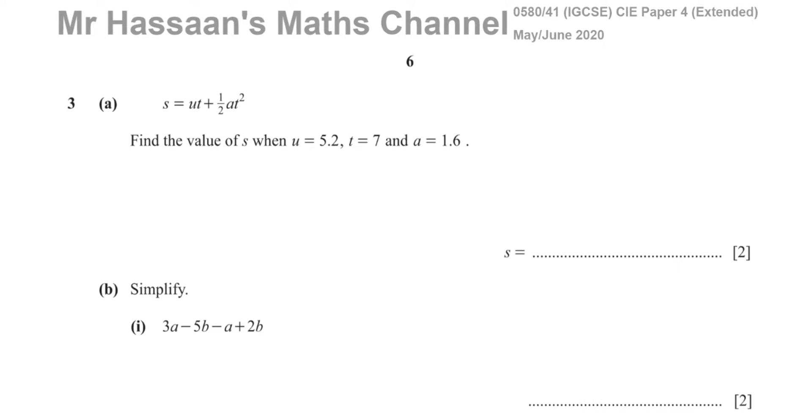This is all about algebra, this question. The first question is giving us a formula, S equals UT plus a half AT squared, which some of you might recognize from physics. It says find the value of S when U equals 5.2, T equals 7, and A equals 1.6.